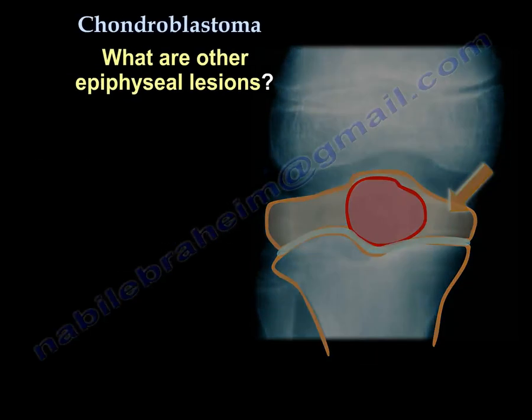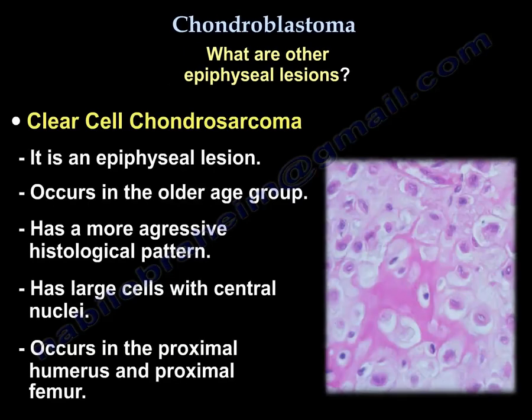What are other epiphyseal lesions? Number one, clear cell chondrosarcoma. It is an epiphyseal lesion that occurs in the older age group. It has a more aggressive histological pattern with large cells with central nuclei. It occurs in the proximal humerus and proximal femur.